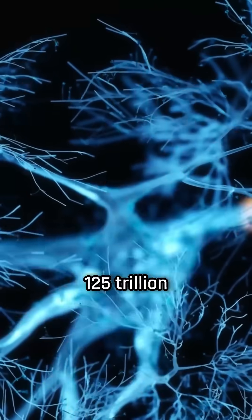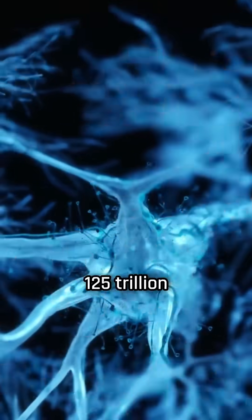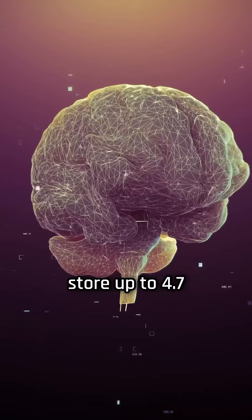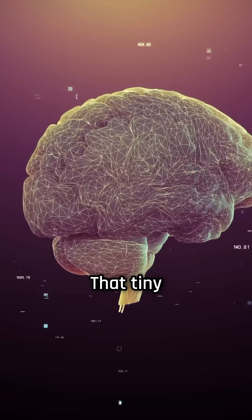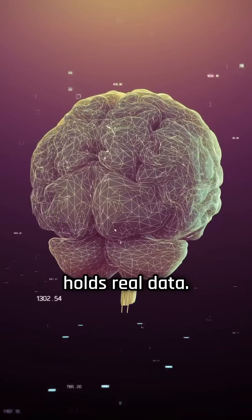Altogether, there are roughly 125 trillion synapses in the human brain. And here's the wild part: each synapse can store up to 4.7 bits of information.